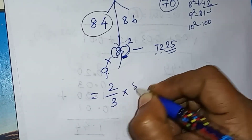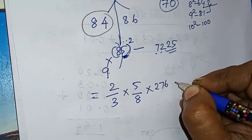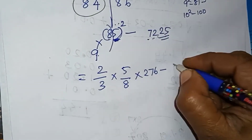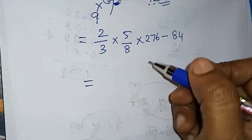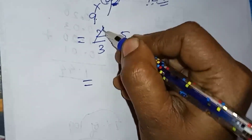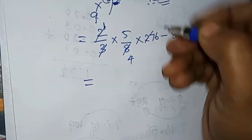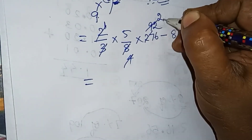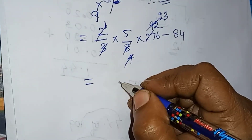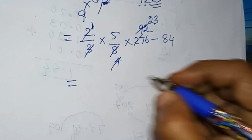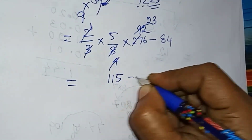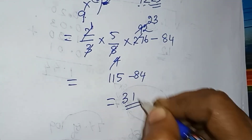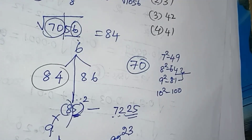2 by 3 into 5 by 8 into 276. We solve this problem — it is 54. Now: 1, 2, 3, 4, 2, 3 — 3, we will solve: 9, 27, 26. So the answer is 31.